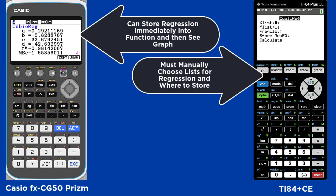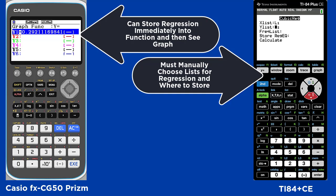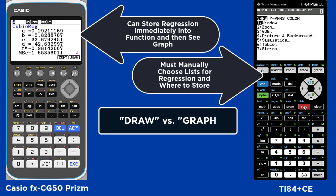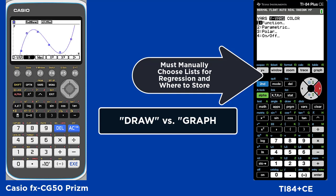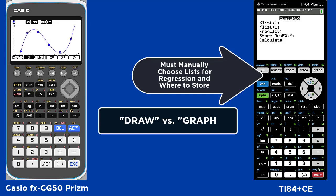In the TI you must leave the visual and go to the STAT calc menu to find the regression, and then you also have to manually choose where to store it using your variables. Once you've stored it and are ready to graph, you hit draw on the CASIO and graph on the TI.